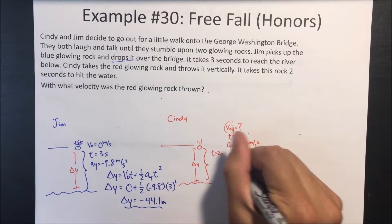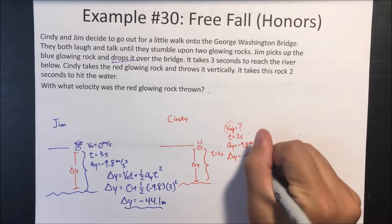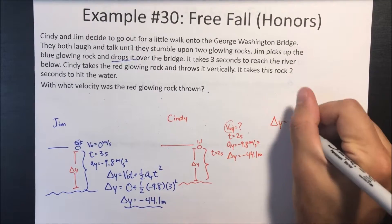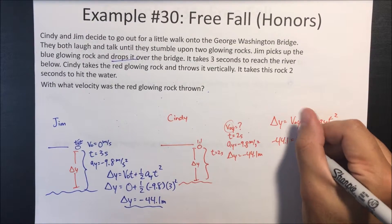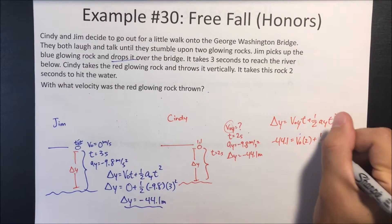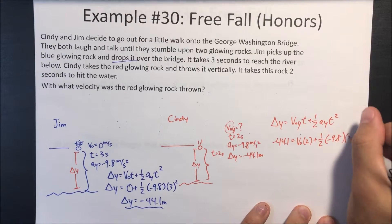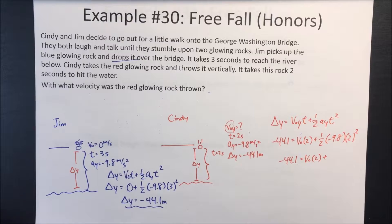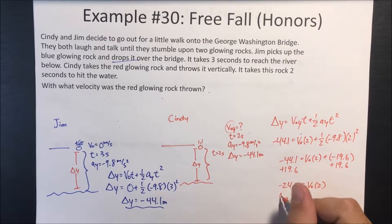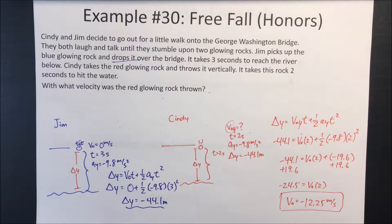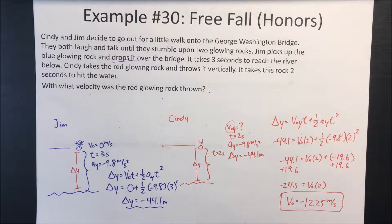Now that we know the displacement is negative 44.1 meters, this will help us find the initial velocity that Cindy threw her rock with. Using the same displacement formula: negative 44.1 equals V initial times 2 plus one half times negative 9.8 times 2 squared. Solving, we find that she throws it down with a speed of 12.25 meters per second.